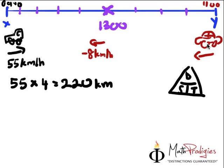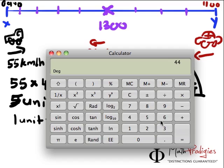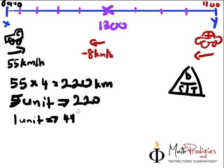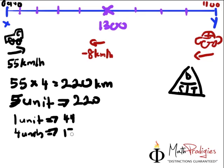Now, what else do we know? Do we know the car's speed? No, we don't know yet. Do we know the time? Yes. Do we know the distance? We can find out. So 5 units is equal to 220. Therefore, 1 unit is equal to 220 divided by 5, which gives me 44. So 4 units, which is what the car travelled, is equal to 44 times 4, which equals 176.